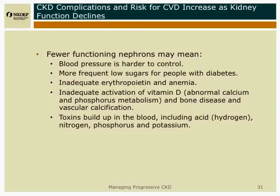The complications and the risk for cardiovascular disease increase as kidney function declines. The fewer functioning nephrons means blood pressure is harder to control because it's harder for the kidney to get rid of salt and water. You may see more frequent low blood sugars for people with diabetes because insulin is metabolized by the kidney. The kidney produces erythropoietin and anemia may appear.